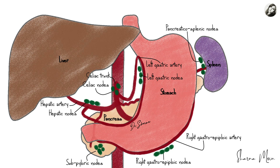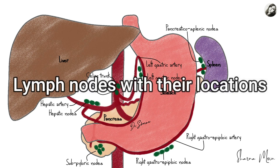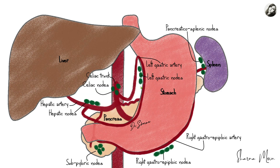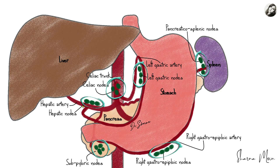Today's video is all about the lymphatic drainage of the stomach. To understand that, we need to know about the location and names of the lymph nodes. In the first segment we will show different kinds of lymph nodes of the stomach with their locations. This is a hand-drawn illustration — here is the stomach, the liver on the left side, the spleen on the right, and behind the stomach we have the pancreas. The red structures are the arteries supplying the stomach, and the green structures are the lymph nodes.